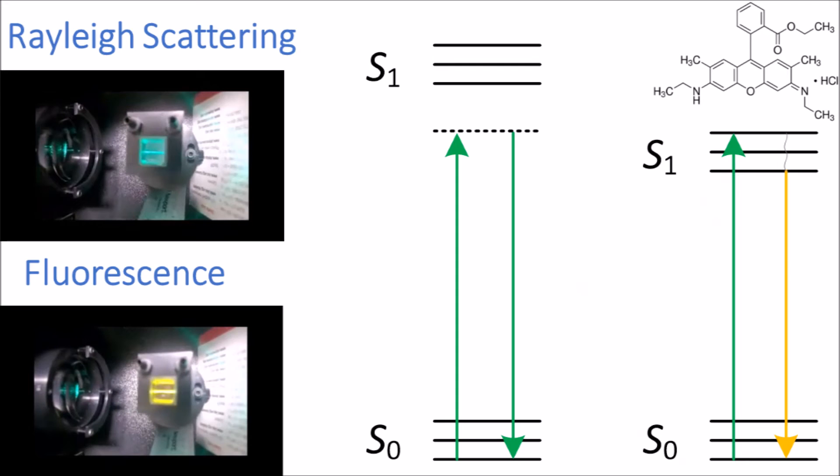Normally, we wouldn't use our eyes as detectors for fluorescence spectroscopy measurements. We would have a more sensitive detector, and we would have this at right angles to the sample so we don't blast it with laser light.